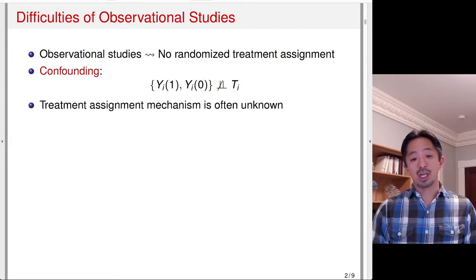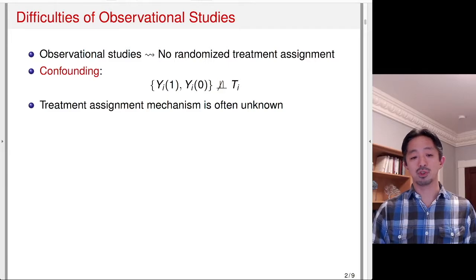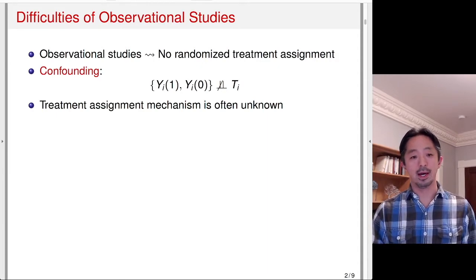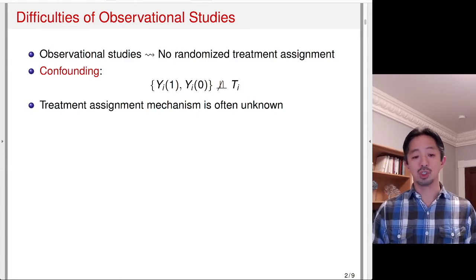The treatment assignment mechanism is often unknown. If it is known, like in regression discontinuity design, we have a clever way of identifying causal effects. But oftentimes the treatment assignment mechanism is unknown. However, it is very important when analyzing observational data to figure out what factors really influence the decision to take up the treatment or to assign the treatment to certain units.